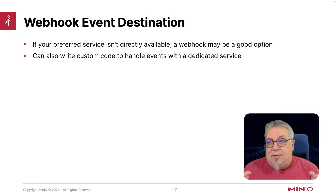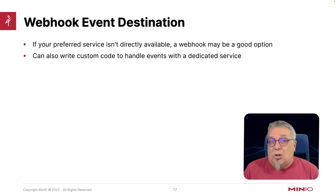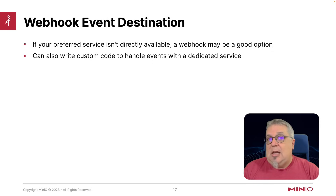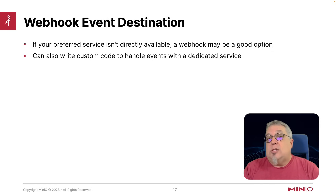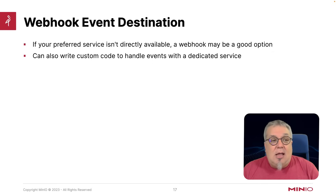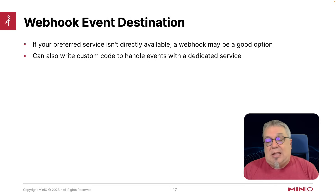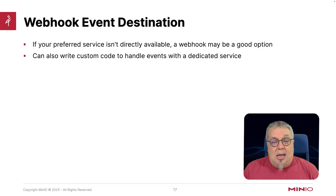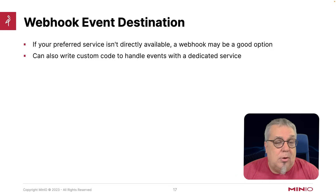The webhook event destination is what you're going to use if your preferred service that you want to send your stuff to isn't directly available. You can write a webhook or deploy one as an excellent option. If your system has a webhook available — for instance, Slack in many cases has these webhooks — you can set up a Slack webhook and connect into it.